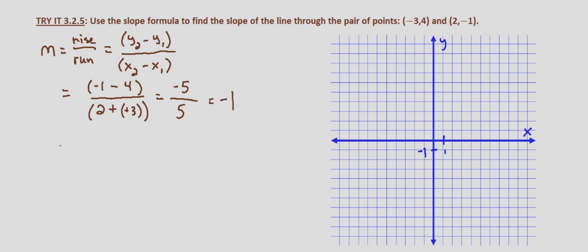Now if we went in the reverse order, let's say negative 3, 4 is our (x₂, y₂), so we start with the y coordinate from that point, which would be 4 minus negative 1, over negative 3 minus 2. Again, minus a negative is the same thing as plus a positive, so 4 minus negative 1 is 4 plus 1, which is 5, over negative 3 minus 2 is negative 5.